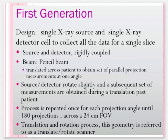This process is repeated once for each projection angle, yielding 180 projections across a 24 cm field of view. This translation and rotation process geometry is referred to as a translate-rotate scanner.